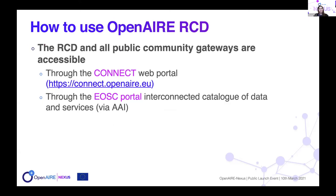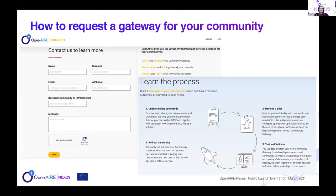How to use it: the Research Community Dashboard and all public gateways are accessible via the Connect web portal at connect.openair.eu and also through the EOSC portal. This is a service you can use on request — on connect.openair.eu you will find a contact form where a research community can ask for more information and request a gateway.